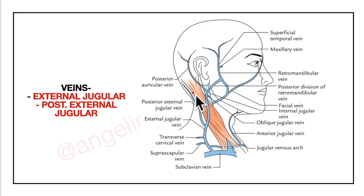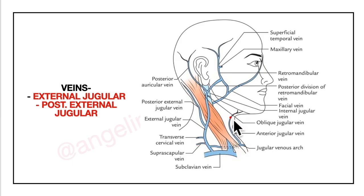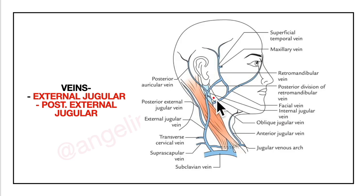Looking at its tributaries, we have the posterior external jugular vein, the transverse cervical vein, the suprascapular vein, and the anterior jugular vein. The oblique jugular vein connects the external jugular vein with the internal jugular vein across the middle one-third of the anterior border of the sternocleidomastoid muscle.